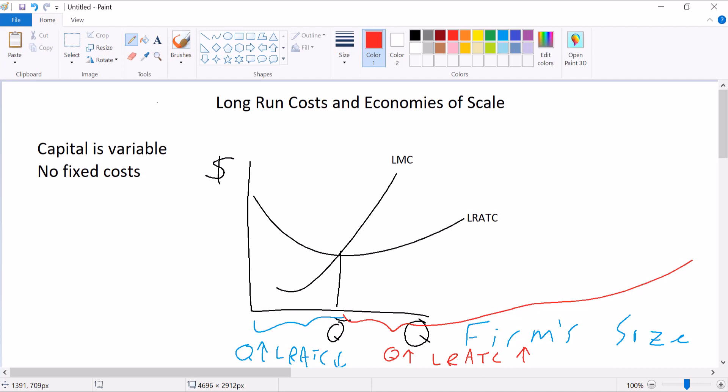So what are we looking at when we see this? In the blue range, the bigger a firm is, the lower its average total cost in the long run. Bigger firms will have lower costs in this blue range. That's important.